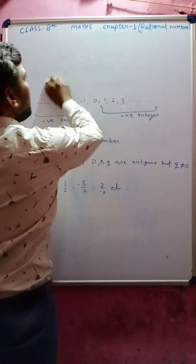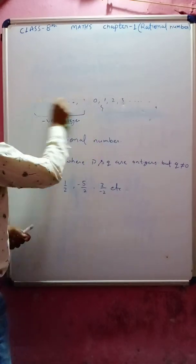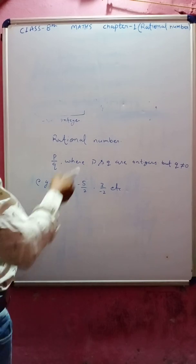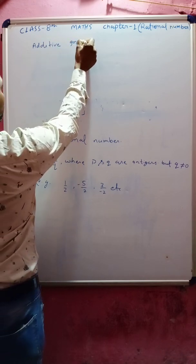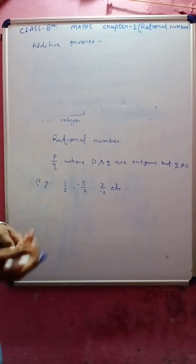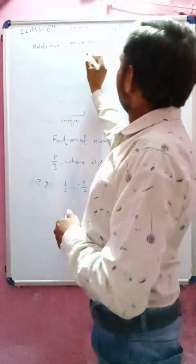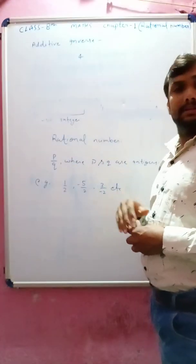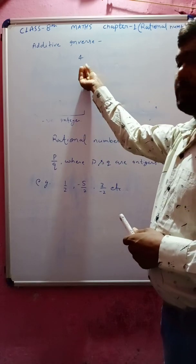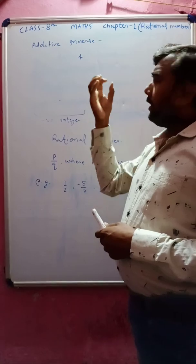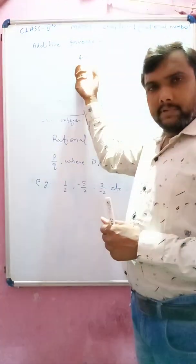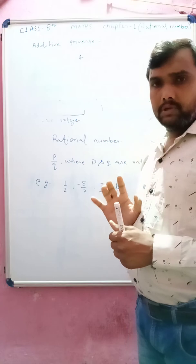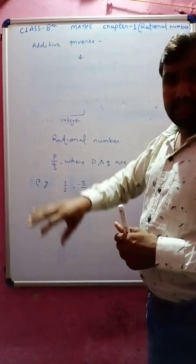Now let's start additive inverse. Additive inverse is very easy. Suppose 4 is the number. Now we have to find the additive inverse of 4. Additive inverse means: what number should we add to the given number so that the result is 0? If we add minus 4 to this number, 4 positive and minus 4 together give 0. So the result is 0.